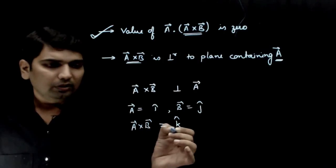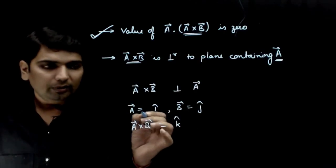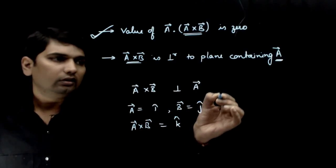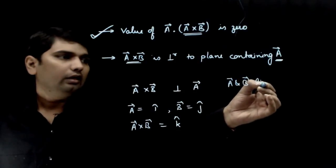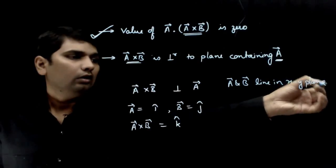So this A cross B is perpendicular to A and perpendicular to B. The plane of A and B: A is along the x-axis, B is along the y-axis.